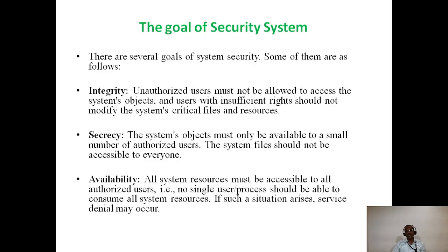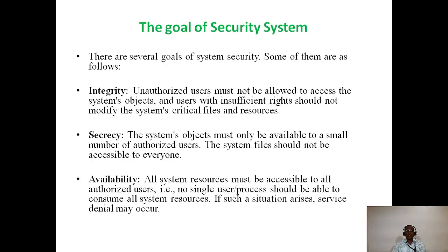The main goal of a security system is to provide protection. There are several goals of a security system, including integrity, secrecy, and availability. Integrity means unauthorized users must not be allowed to access the system's objects, and users with insufficient rights should not be able to modify the system's critical files and resources.